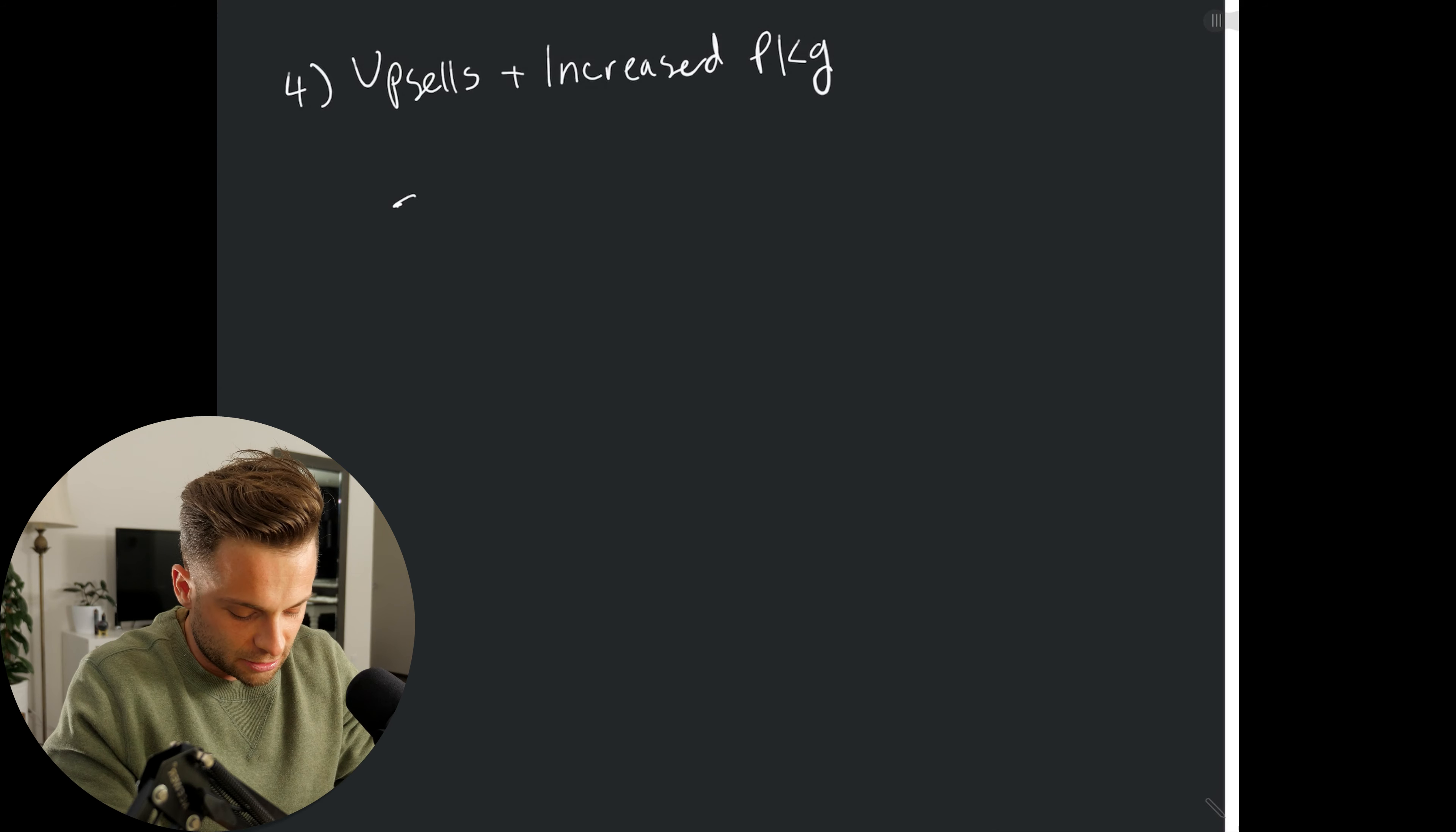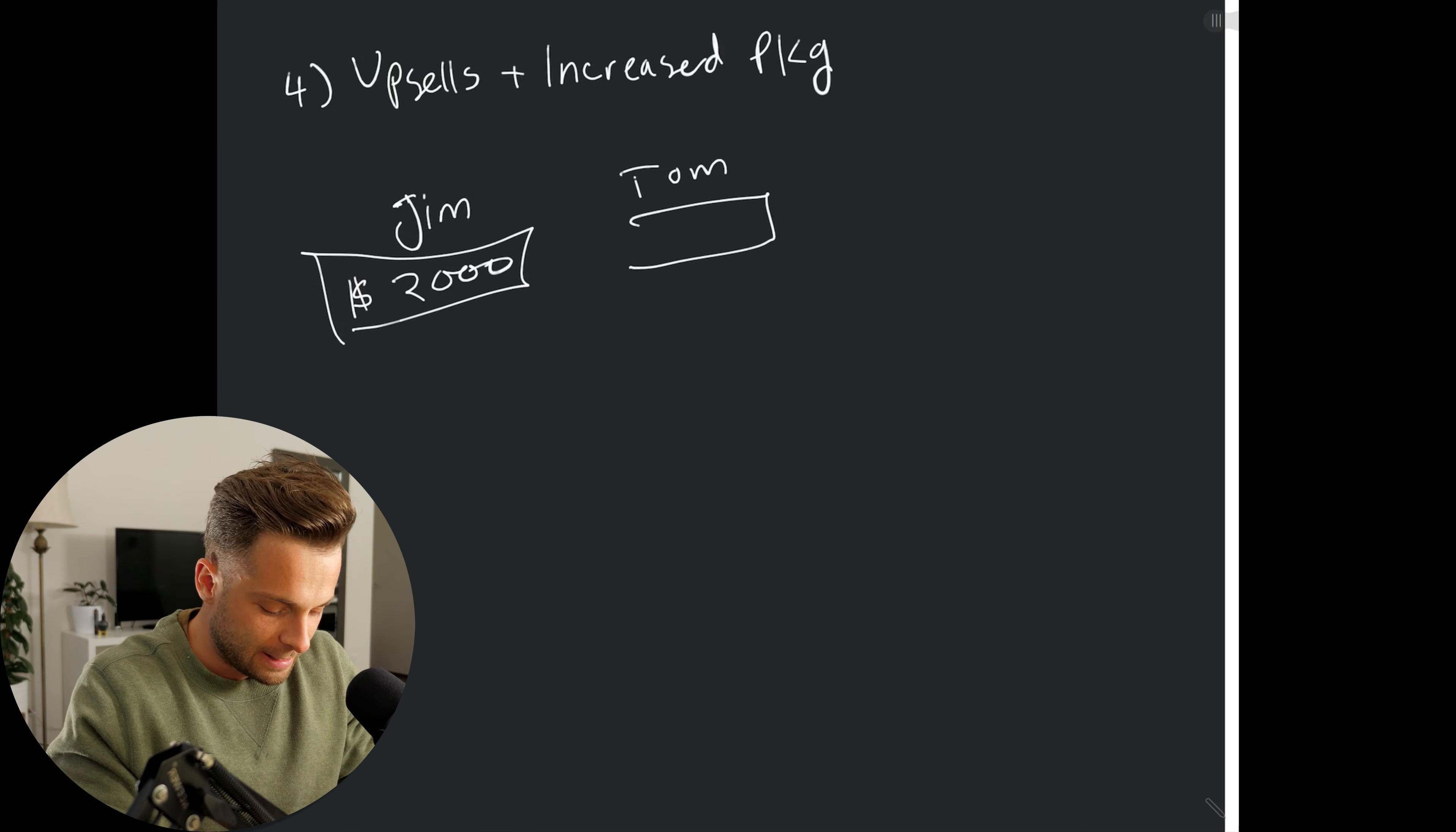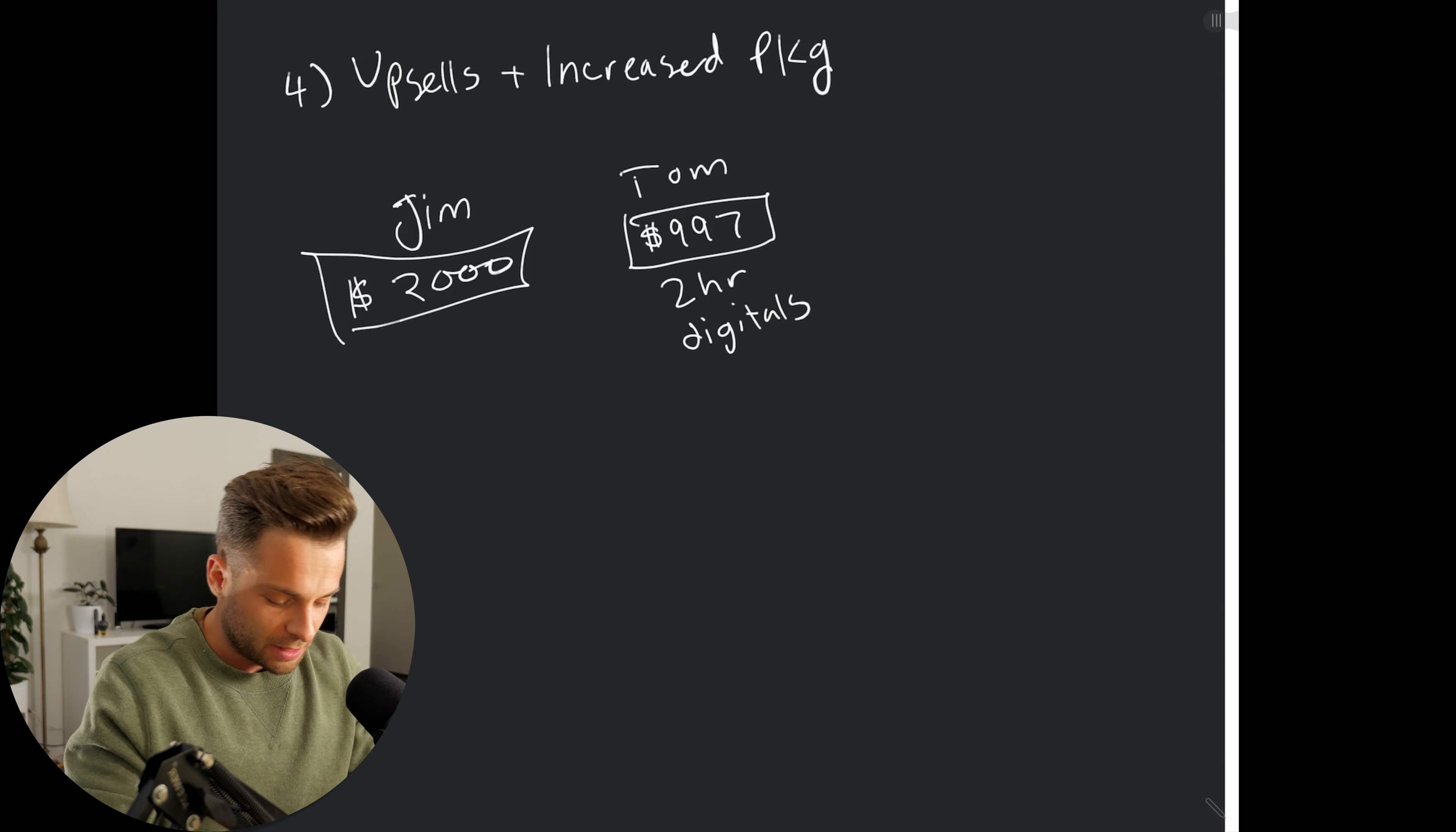So, that would be just upgrading them to another package. So, in our earlier example, Jim says, okay, $2,000, I'm going to give you absolutely everything your heart can imagine. And let's say Jim is now shooting boudoir, and Tom is also shooting boudoir. And Tom says, you know what, I actually am going to price my services at $9.97, and that's for just the two-hour shoot, and it's got a baby photo book, or just digitals only.